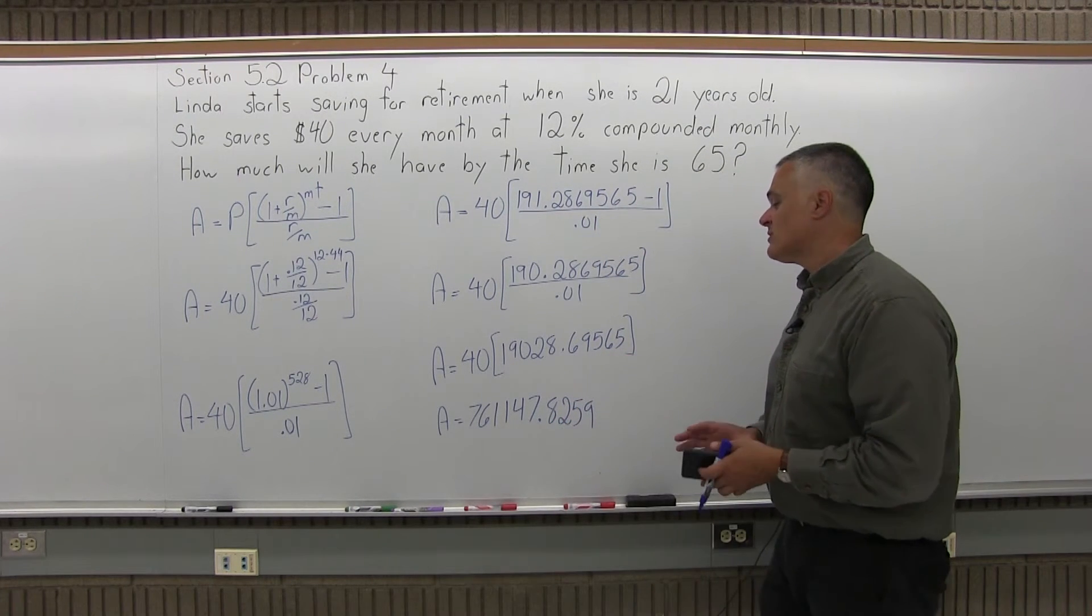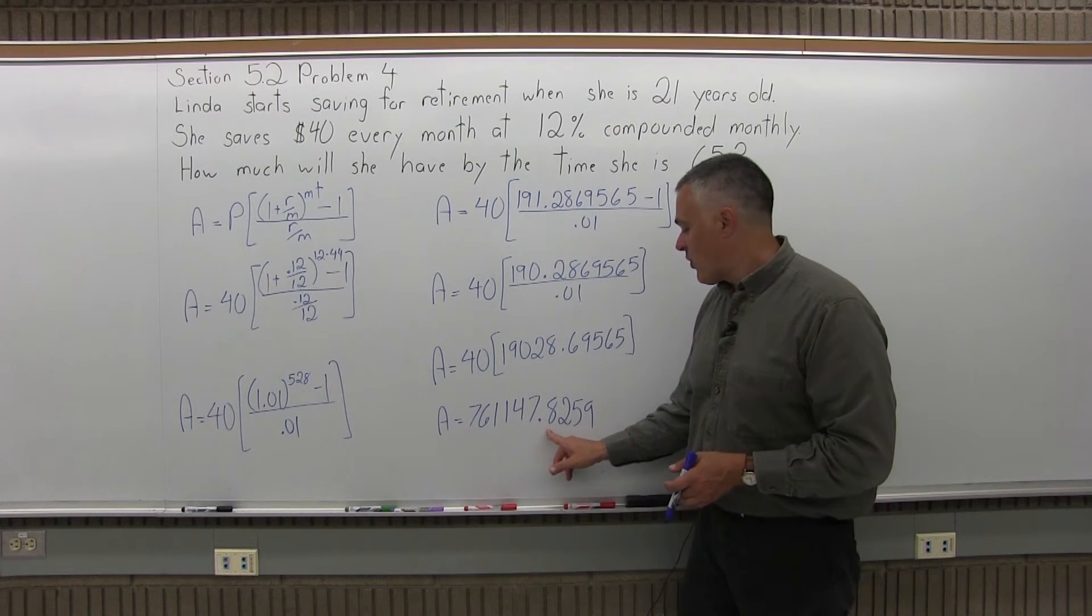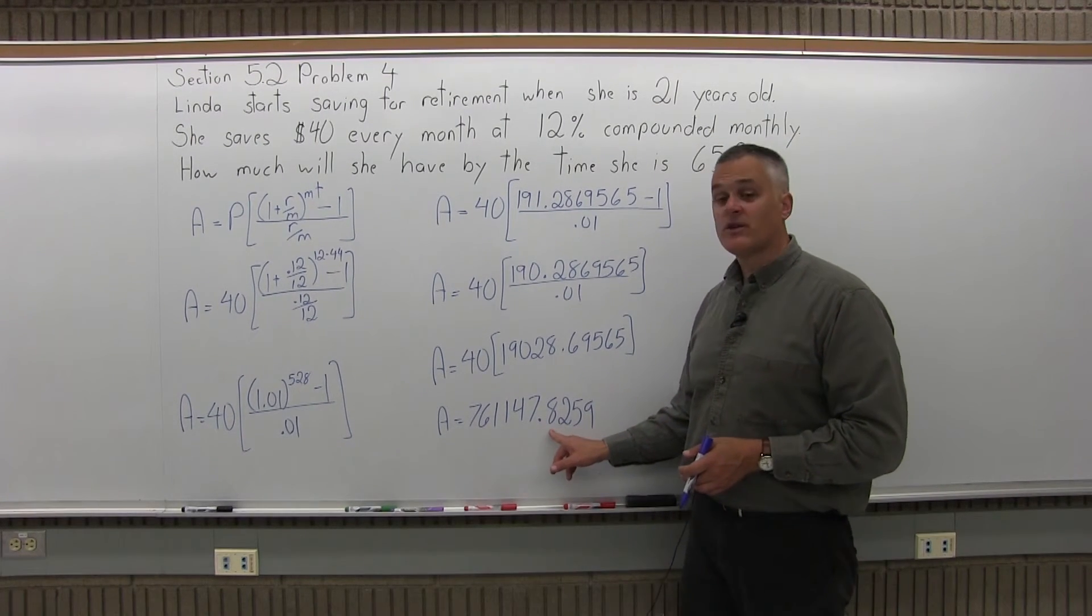Now, because this answer represents money, I don't want to have four places after my decimal. I'd like to round it to just two.